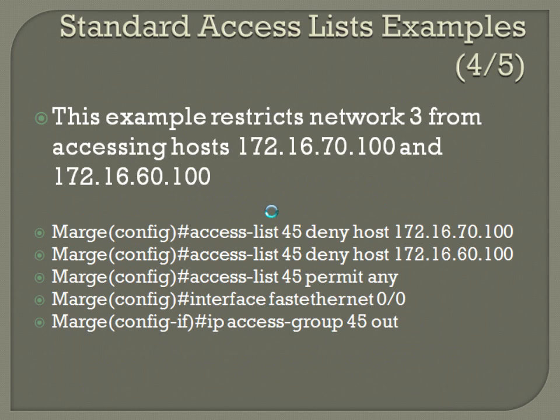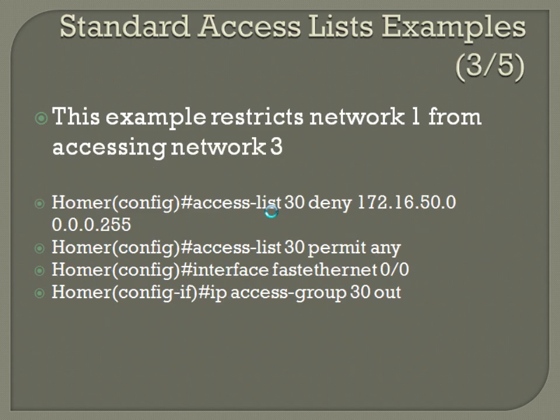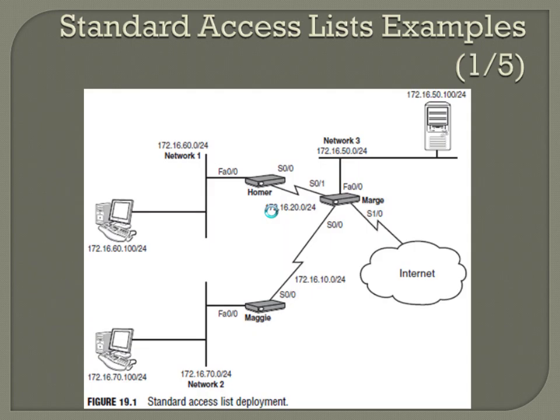This example restricts Network 3 from accessing hosts 172.16.70.100 and 172.16.60.100. Here's Network 3 — those hosts don't actually show up on the map, but they're applied as general IPs.